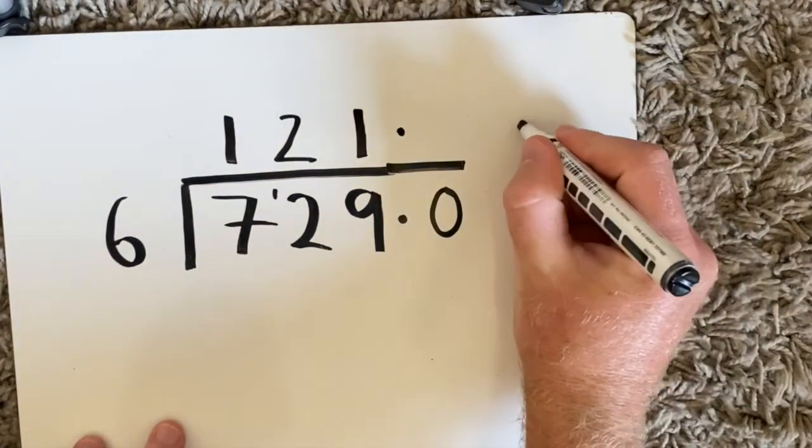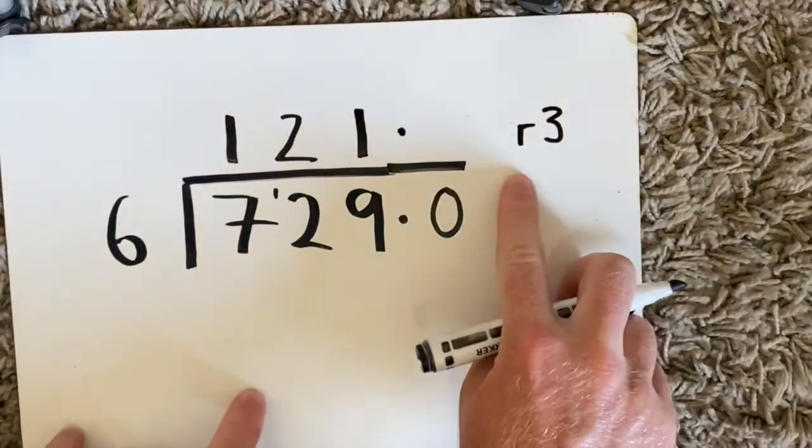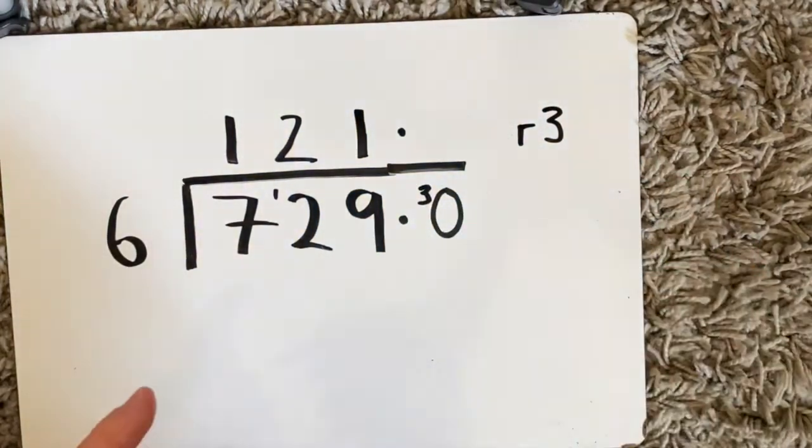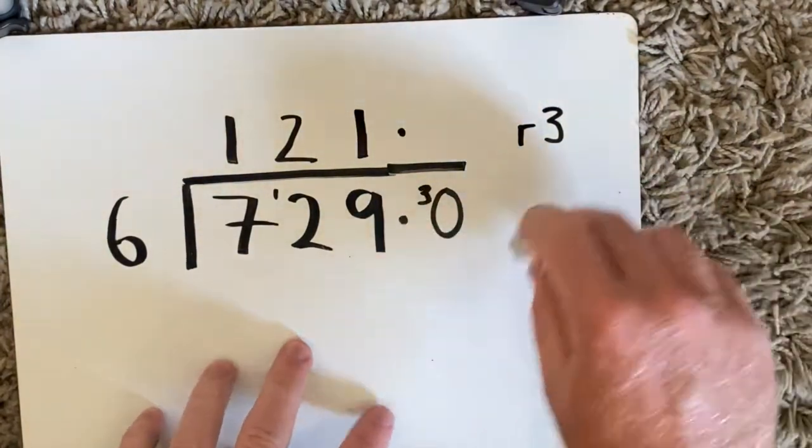I had remainder 3. Instead of putting remainder 3 though I'm going to put that 3 over here instead and add it to the zero.